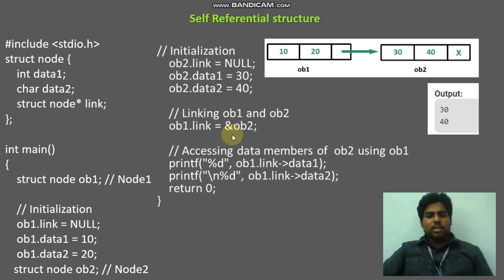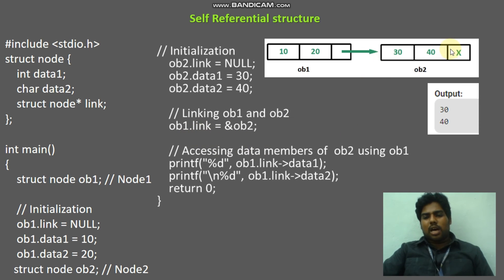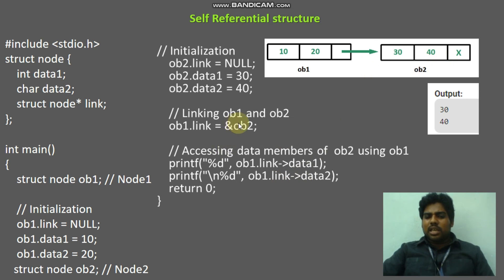Now, I am going to link both the nodes. For linking, object1 dot link — I am going to assign the address of OB2. Object1 dot link equal to address of OB2. So the starting address of OB2 is stored here. Now, using this link, I can access all the data values of the second node. Printf OB1 dot link dot data1 means you can access the value 30. And OB1 dot link dot data2 means you are accessing 40. Already, OB2's starting memory address is stored in the link. That is why you are getting the output 30 and 40.